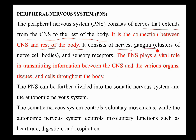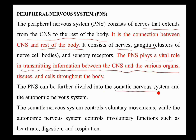The peripheral nervous system is divided into the somatic nervous system and the autonomic nervous system. If a certain region of the body experiences pain, the peripheral nervous system sends the message to the central nervous system. The somatic nervous system controls voluntary movements, whereas the autonomic nervous system controls involuntary functions such as heart rate, digestion, and respiration.